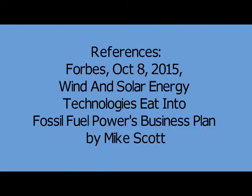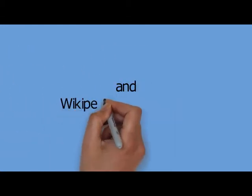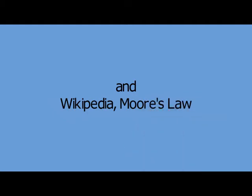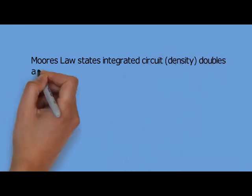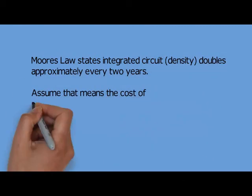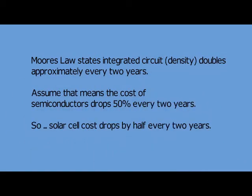I got information about costs from the Forbes article by Michael Scott, and the definition for Moore's Law I got from Wikipedia. Moore's Law says integrated circuit density doubles every two years, or you could say the cost of semiconductors drops by 50% every two years.